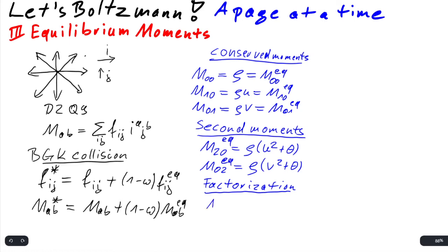they can be expressed in equilibrium as, we begin with M_1,1 equilibrium. This can be expressed as the equilibrium of M_1,0 equilibrium times M_0,1 equilibrium, and we have to normalize this by dividing by rho.